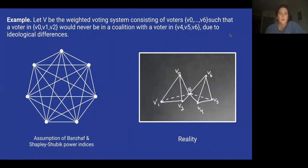If we have a voting system with six voters, the assumption on the left would be that all voters vote with each other, so every voter is connected to every other voter. But in reality, voters zero, one and two would never vote with voters four, five and six. But voter three would go either way, kind of a swing voter. So in actuality, using simplicial complexes, the image on the right is what the coalitions would actually look like. If we are measuring power, we should only take into consideration those coalitions.